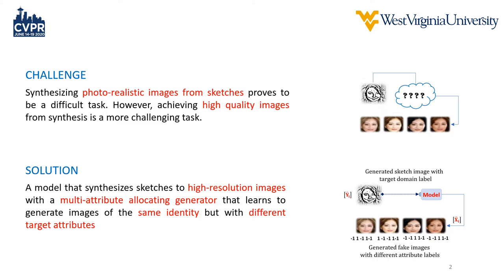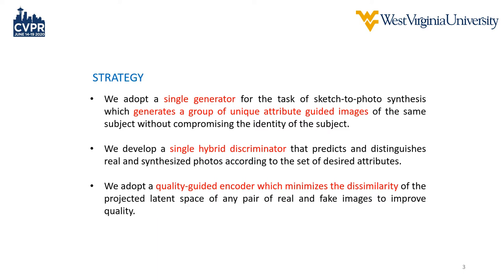When we talk about quality guided sketch-to-photo image synthesis, basically what we are saying is we want to transition from a sketch to a photorealistic image while maintaining high quality. This task is not easy because there are so many factors that could affect the efficiency of such a model, like the hyper parameters, the nature of the sketches, and unique attributes that have been added. So we have to come up with a model that could transition the sketches into images with unique attributes and at the same time maintain quality without compromising the identity of the subjects.